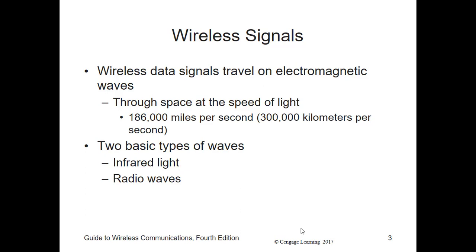The light from a flashlight or the heat from a fire also moves through empty space as waves. These waves, known as electromagnetic or EM waves, don't require any special medium — just air, or any type of conductor such as copper wire or optical fiber. Instead, wireless signals travel freely through empty space at roughly the speed of light — 186,000 miles per second.